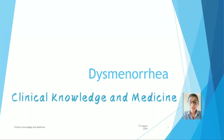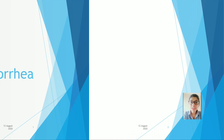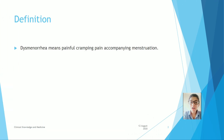Hello everyone, welcome to Clinical Knowledge and Medicine. Today's topic is Dysmenorrhea, means painful menstruation. Definition: Dysmenorrhea means painful cramping pain accompanying menstruation.